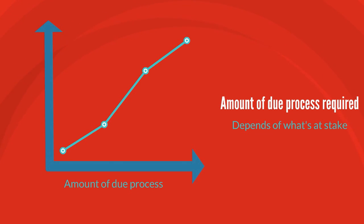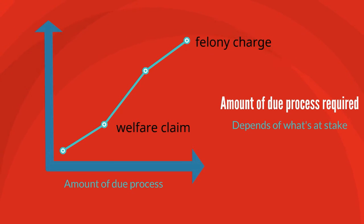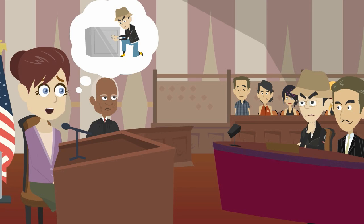For example, if the state denies someone's welfare claim, the state does not have to give as much due process as it would if it was going to convict someone of a felony charge. The Due Process Clause would require a person accused of committing a serious crime to be entitled to a fair trial before being sent to prison.